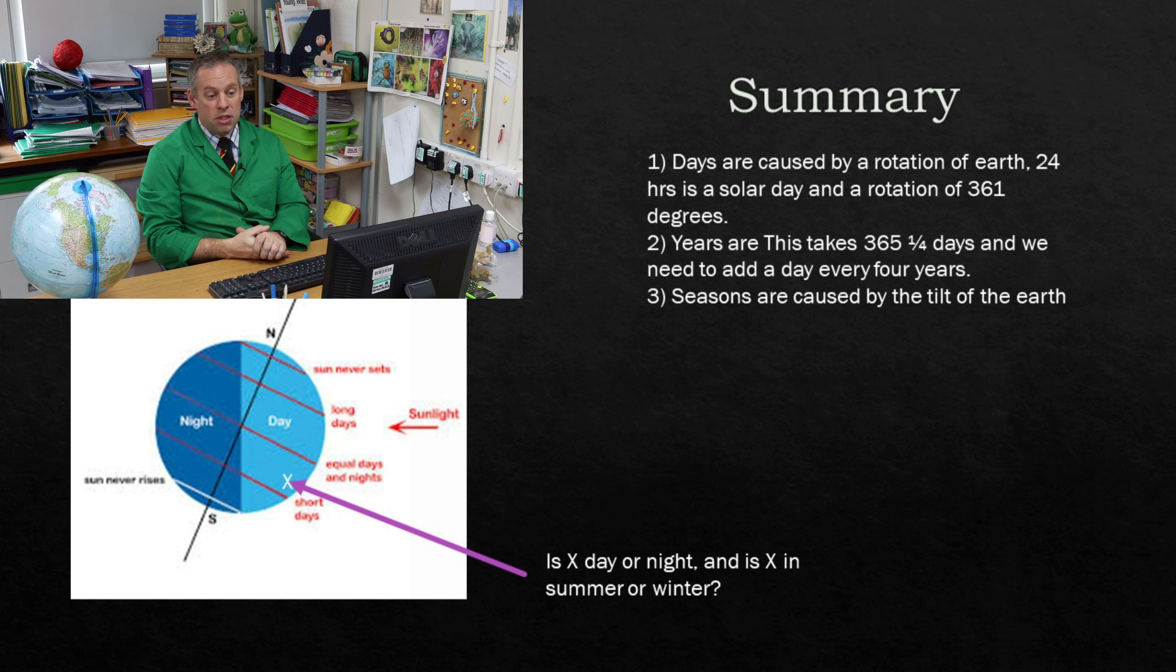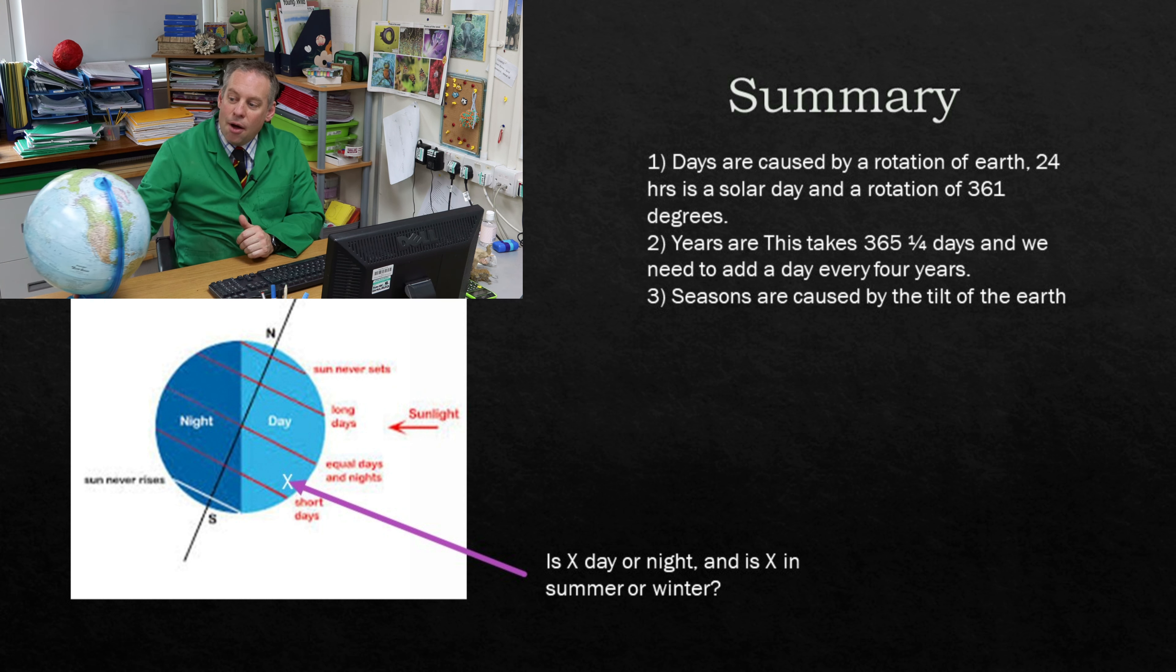We talked about years being an orbit of the sun going all the way around and how that took 365 and a quarter days and that you need to put in a year every four years, called a leap year, in order to make that balance.